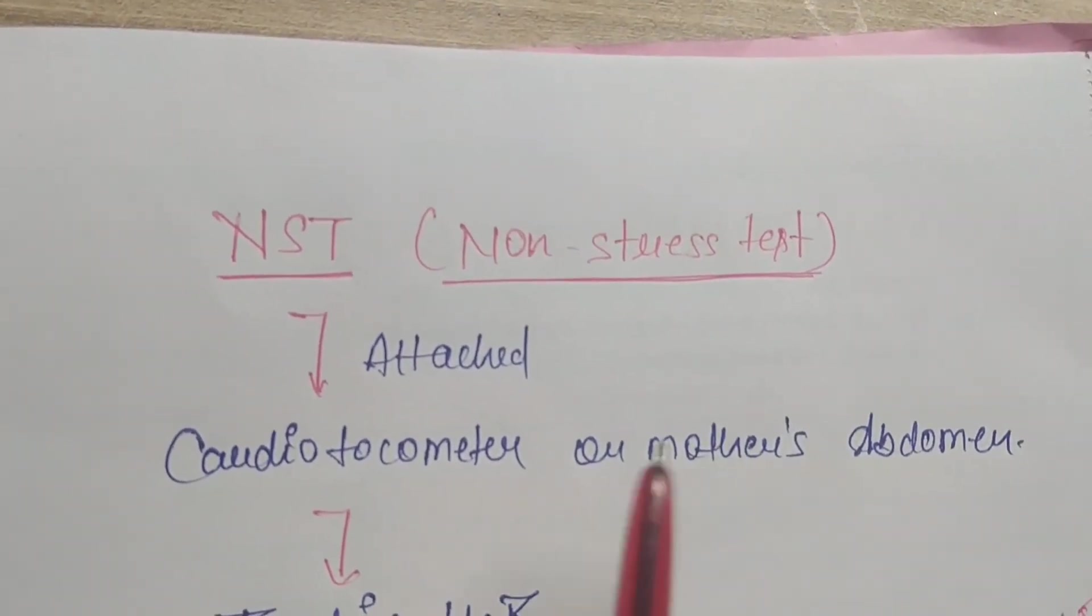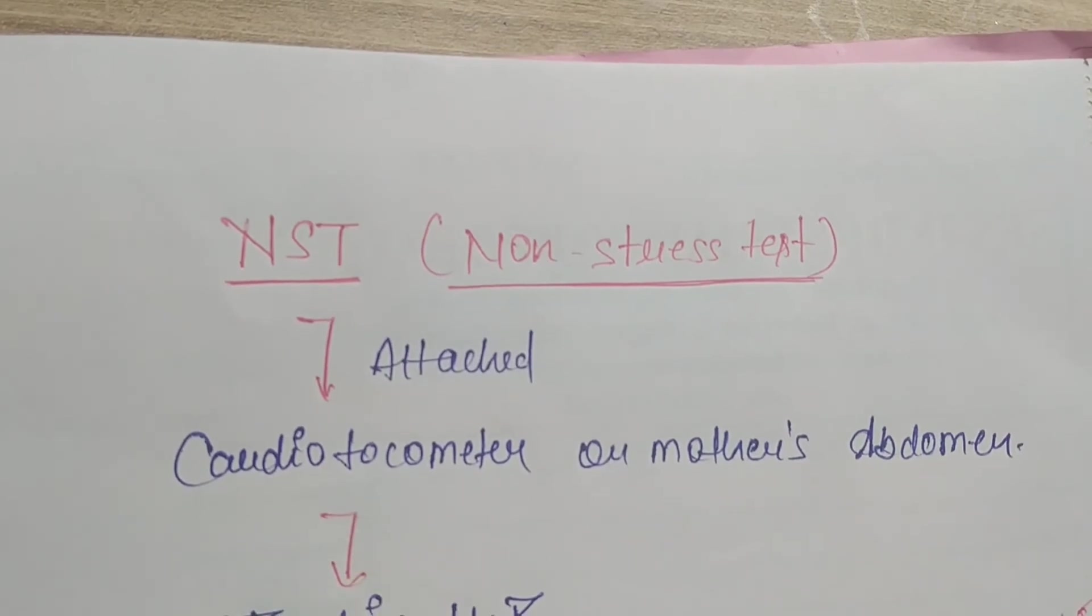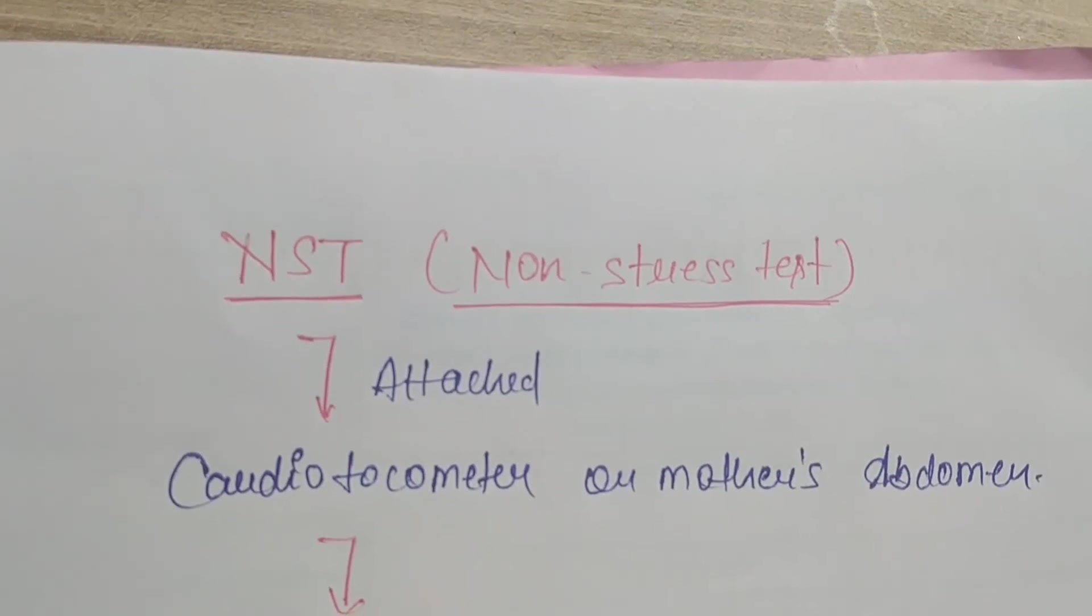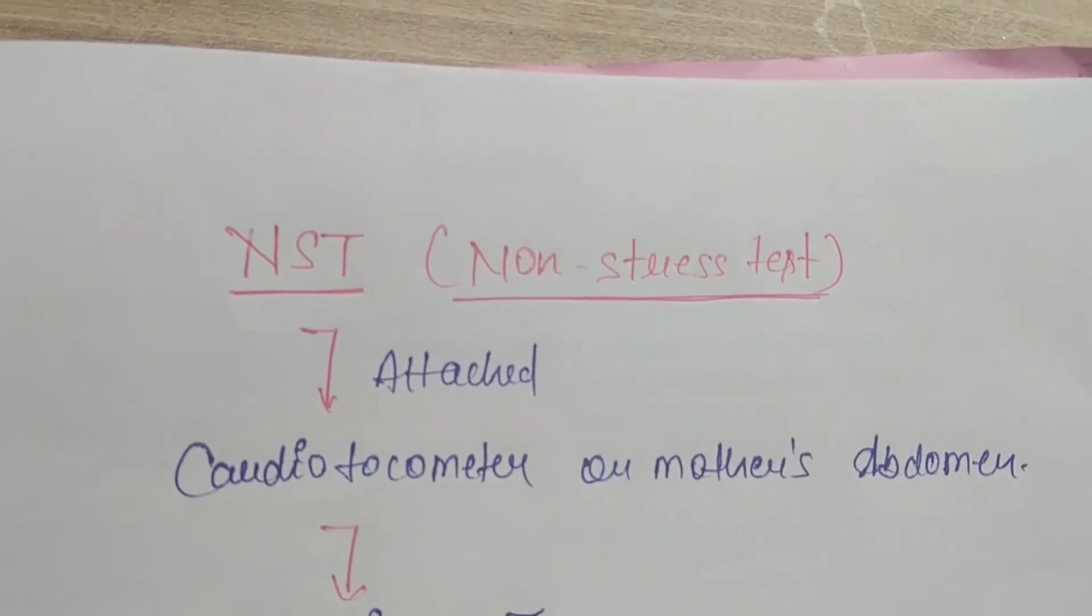What is the cardiotocometer? The cardiotocometer is a device that we use to assess the fetal heart rate and movement in a fixed period of time.